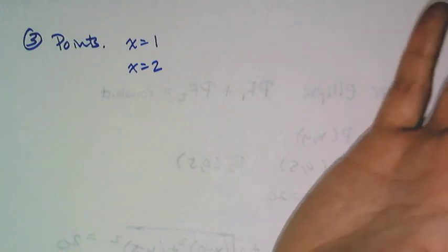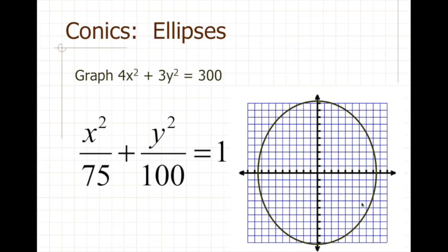Here is the graph of that ellipse. 5√3 is about 8.5, and the y-intercepts are at ±10. Looking at the equation x²/75 + y²/100 = 1, notice that if you square 5√3 you get 75, and if you square 10 you get 100. So the 100 is the square of half the major axis length, and the square root of 75, doubled, is the length of the minor axis.